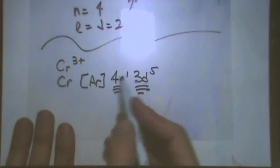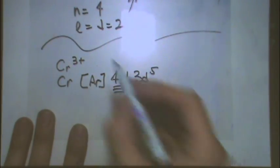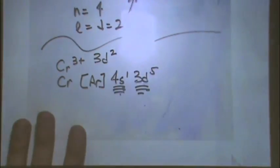4S1, 3D5. This is that half shell and this is the half shell thing. Same application from Hund's rule. Now, I'm losing 3 electrons, so I'll lose which one first? The S and then 2 of the Ds. So, this is 3D3.